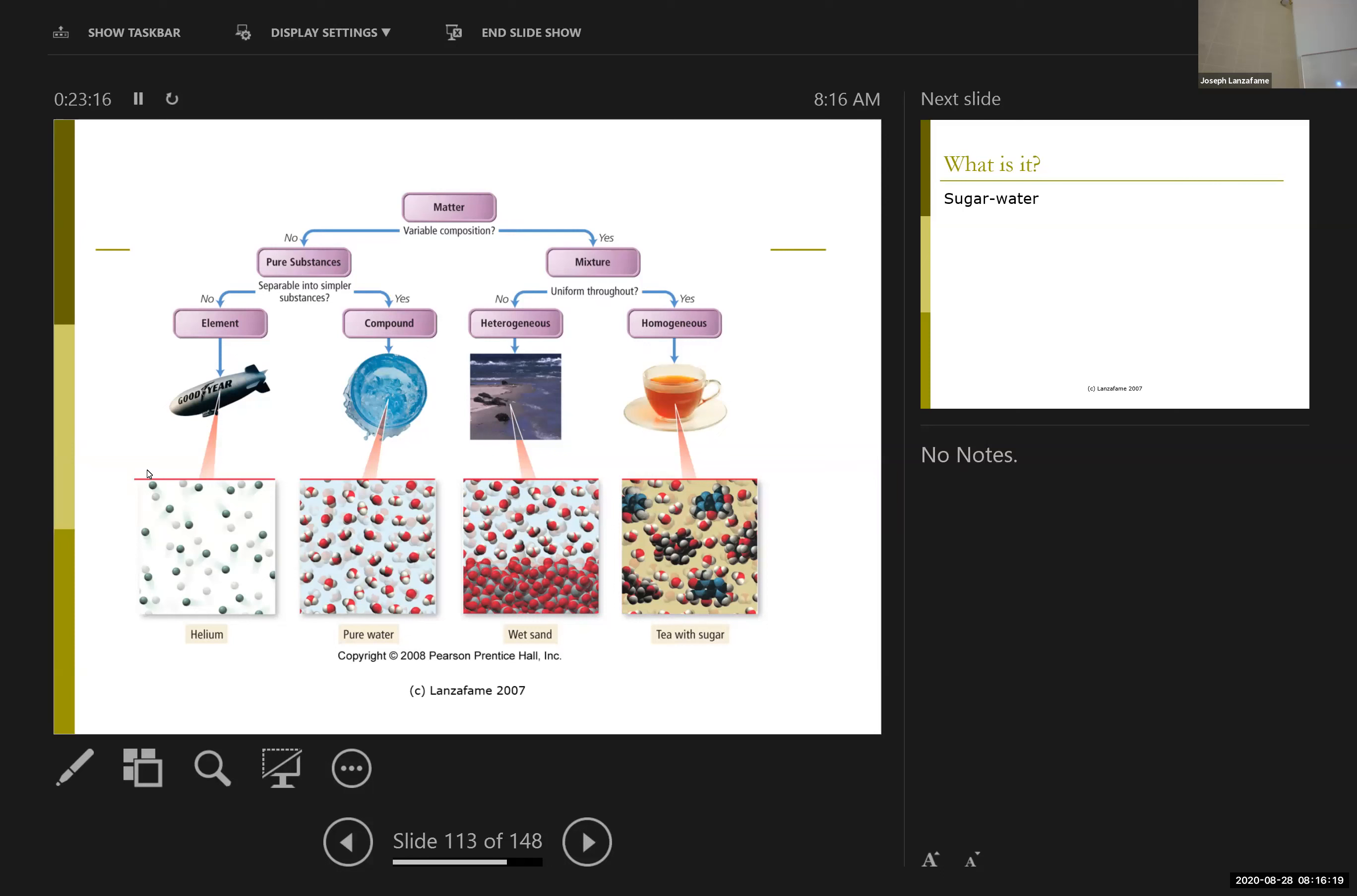In the case of the sand, I've got my silicon dioxide molecules that are laying on the bottom there, because if you've ever been on the beach, the sand is on the bottom. Whereas my tea with sugar has my sugar molecules, which is mostly what you're seeing in that picture, floating around amidst the water molecules.